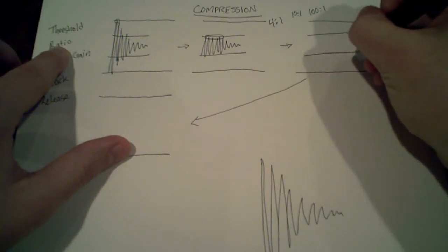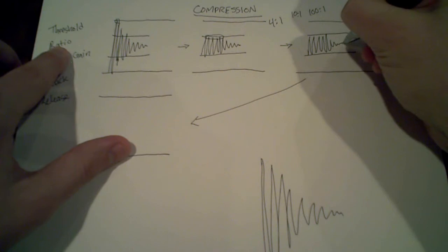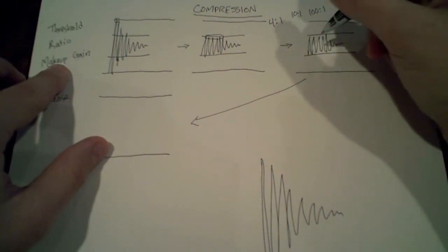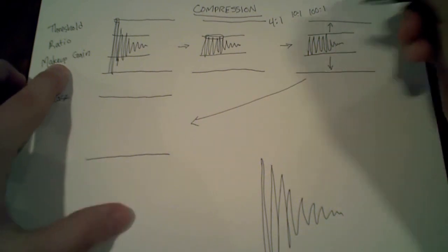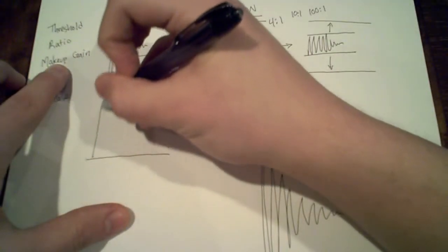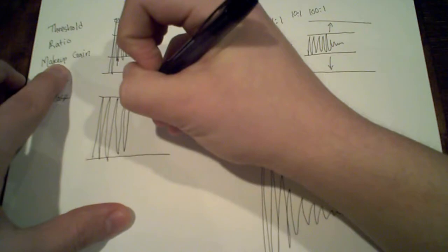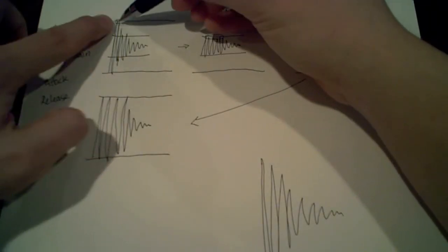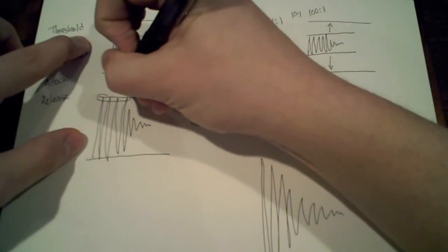Now we're going to go to makeup gain. Basically, this is just a volume knob. Now that we've crushed the sound down and it's quieter, we want to expand it so it's just as loud as it originally was. Your signal is now the same loudness, but the loudness lasts a little longer — so the attack that was short before is now extended.